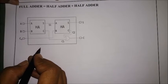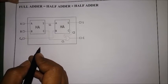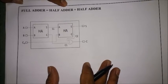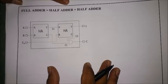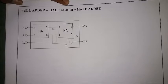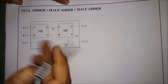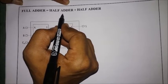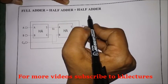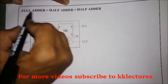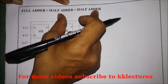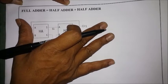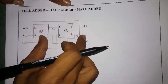Hi everyone. In this video we are going to see how to design a full adder using two half adders. As we know, a full adder adds three bits. Designing a full adder using two half adders means we have one half adder which can add two bits and one more half adder which can also add two bits, but we want only three inputs.